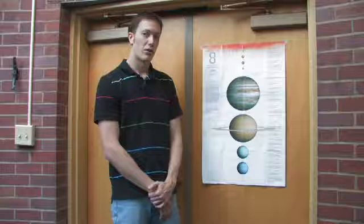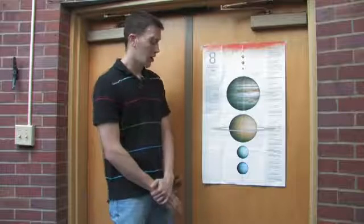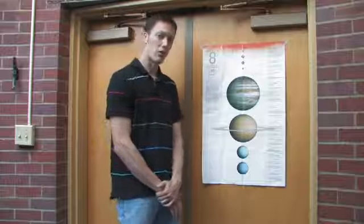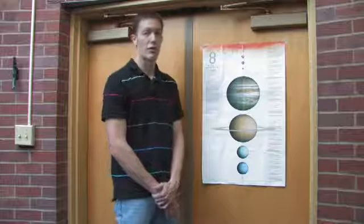And depending on which solar system model you enjoy the most, you can either end your solar system there or you can go to our ninth planet, which is Pluto, which orbits at about 40 times the Earth's Sun distance.